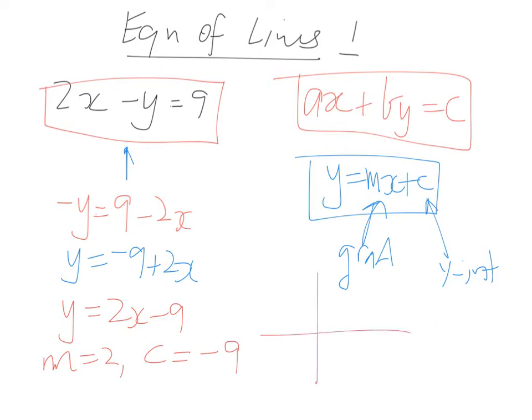So our graph, if we were asked to graph it, would look something like this. We're here at -9 and we've got a gradient of 2. So that's the way we go about it - that's the first thing we've got to show you in terms of the equation of the straight line.